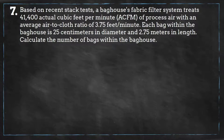Based on recent stack tests, a bag house's fabric filter system treats 41,400 actual cubic feet per minute of processed air with an average air-to-cloth ratio of 3.75 feet per minute. Each bag within the bag house is 25 centimeters in diameter and 2.75 meters in length. Calculate the number of bags within the bag house.